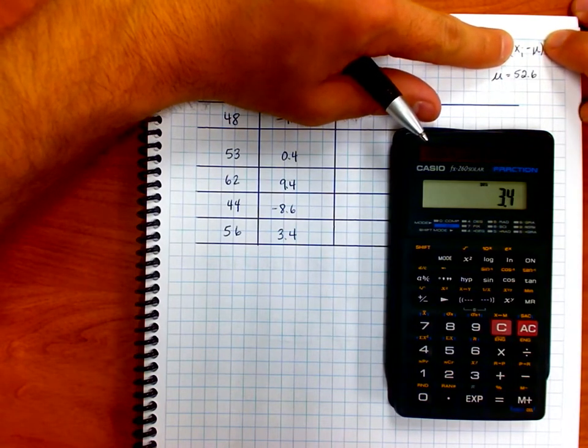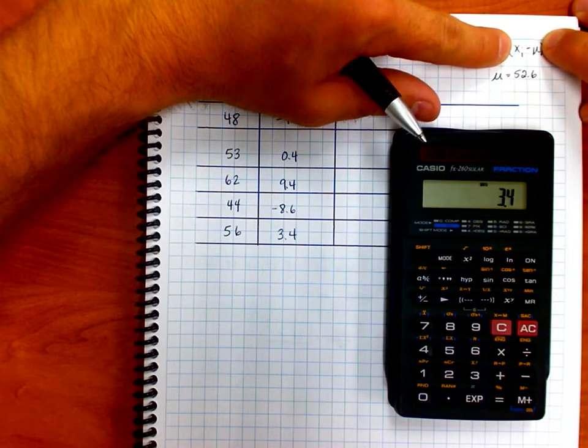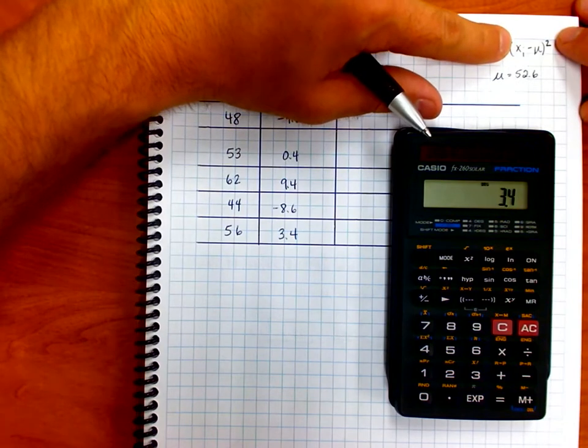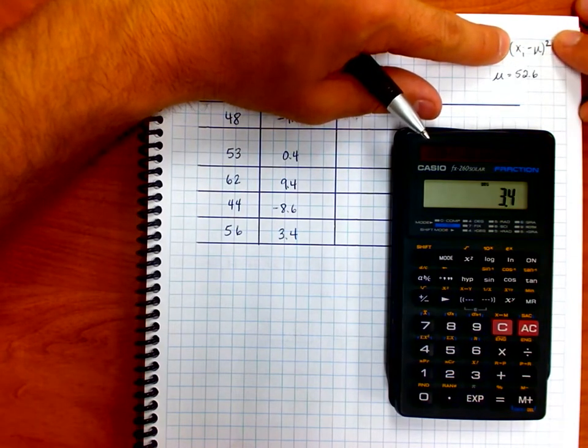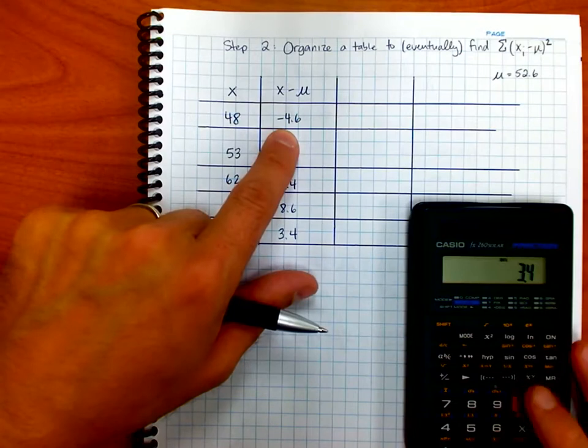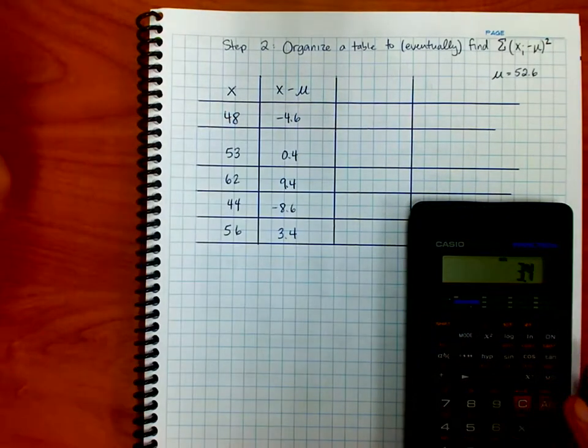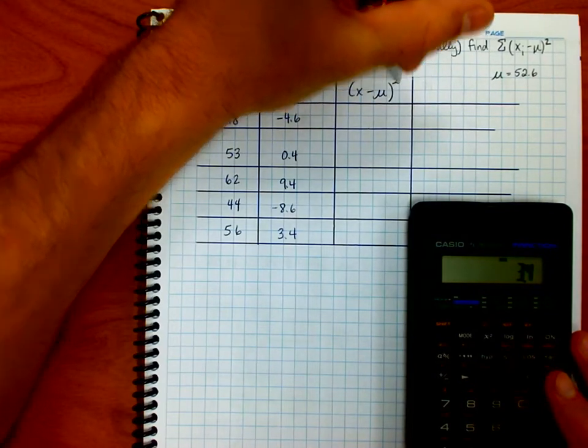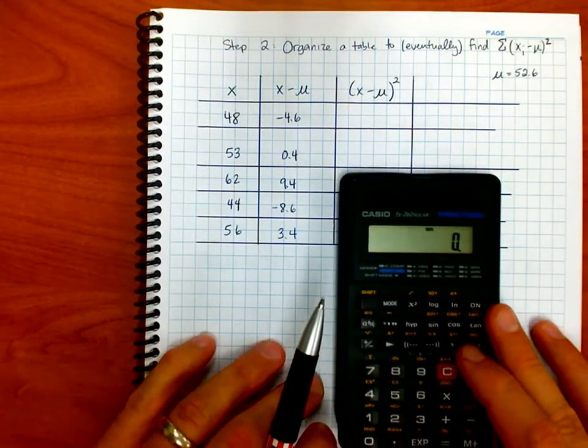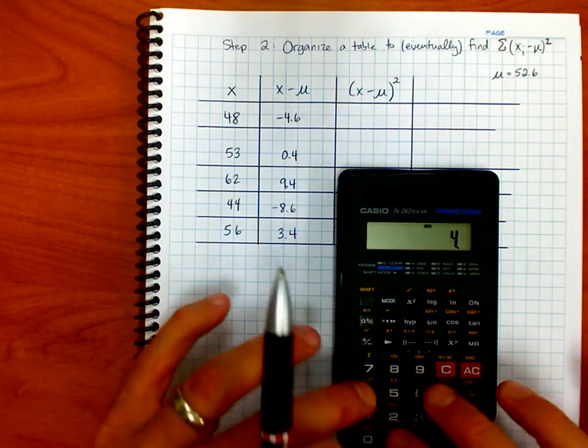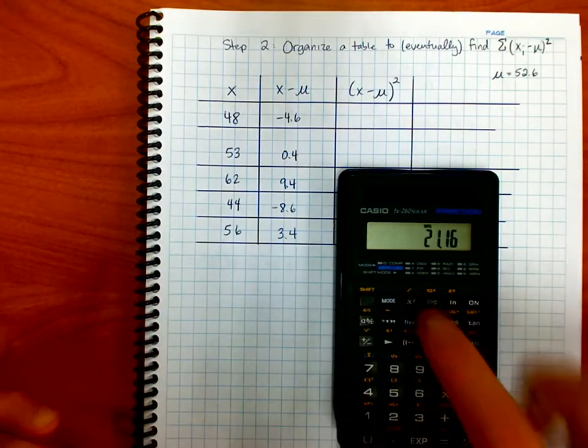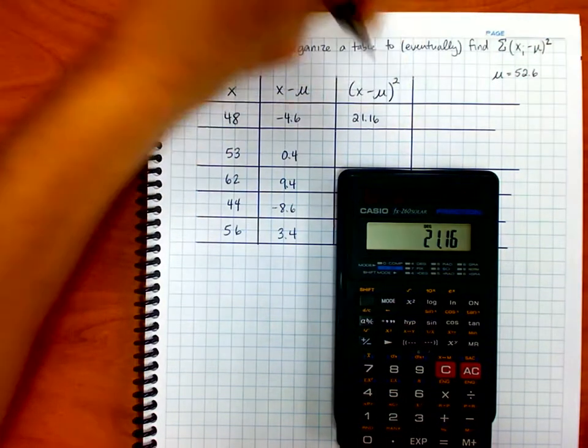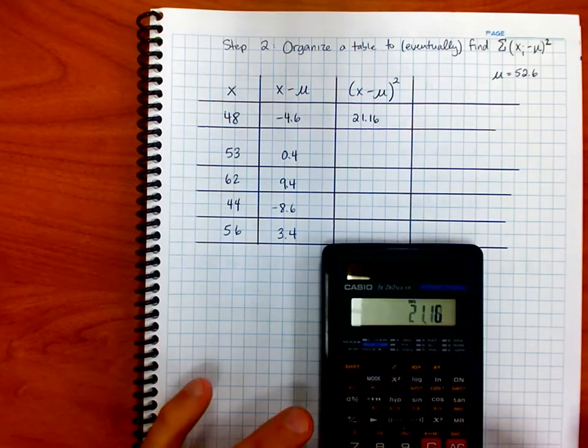Now, the next thing that needs to happen for each of those five values is I need to take this value here, this x minus the mean, and I need to square it. Because I've done, please excuse my dear Aunt Sally, I've done the parentheses, now it's time to do the exponent. So I'm just going to take each of the values here that I have in this category, and I'm going to go ahead and I'm going to write it over one spot, and I'm just going to square it. So I'm going to take x minus μ, and I'm going to square that value. So what is negative 4.6 squared? That's the question. So I've got 4.6, and there's negative 4.6. I'm going to square it on my calculator. That gives me 21.16. By the way, no rounding. No rounding here.